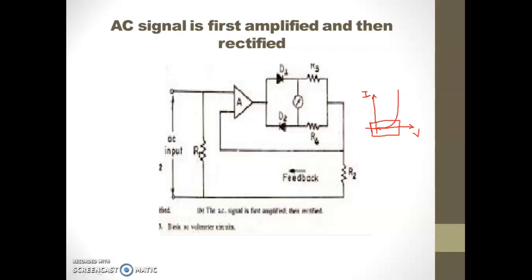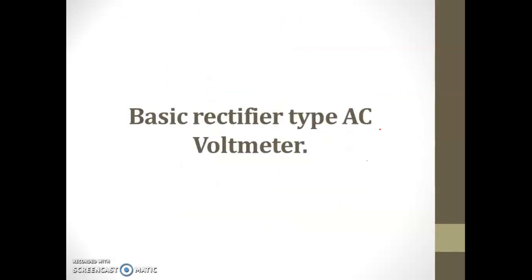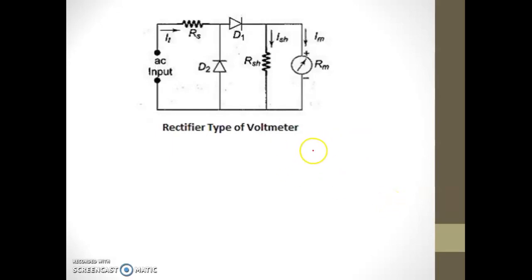The dependence of the diode characteristic on temperature is also an important factor in AC voltmeters. The rectifier shows capacitance properties under reverse bias and tends to be affected at high frequencies. Now, let's see the basic rectifier type of AC voltmeter. As shown in the circuit diagram, in this case, two diodes are used for the rectification action — diode D1 and diode D2. This is the AC input signal, the signal which is to be measured. If the current passing through the diode is small, there is a non-linearity problem, but for higher current the diode shows better linearity.